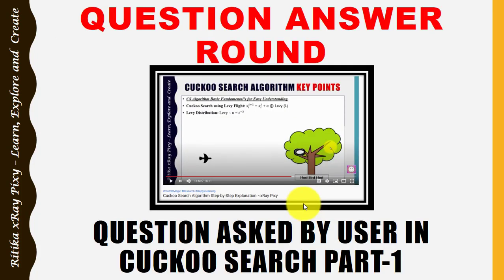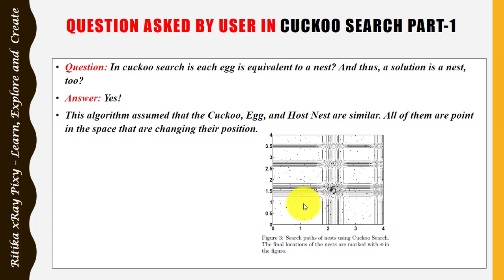Now addressing questions from part 1. First question: in cuckoo search, is each egg equivalent to a nest, and thus the solution is a nest too? Yes — in this algorithm they assume the cuckoo egg and host are similar; we cannot make any difference between a cuckoo egg and a host nest. All of them are points in the space that are changing their position.